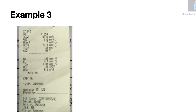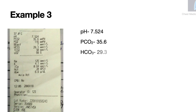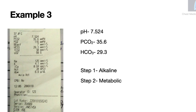Example 3: The pH here is 7.524, the pCO2 is 35.6, and the bicarbonate is 29.3. Step 1: It is alkaline. Step 2: It is metabolic. So this is a case of metabolic alkalosis.